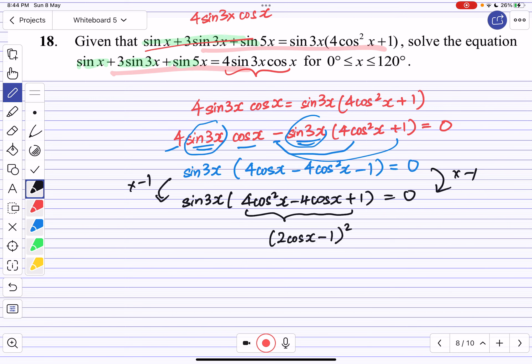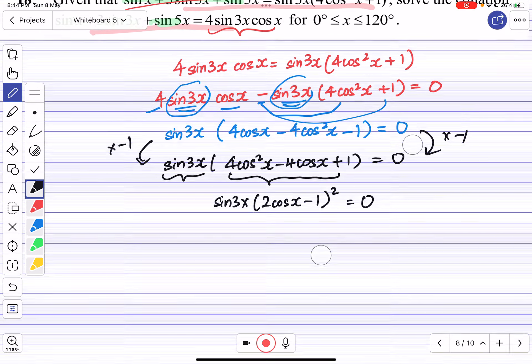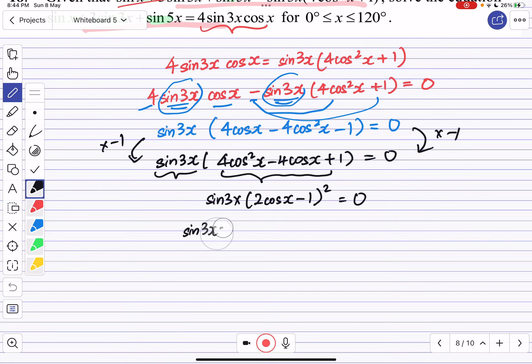With that, solve sin 3x = 0, or (2cos x - 1)² = 0.